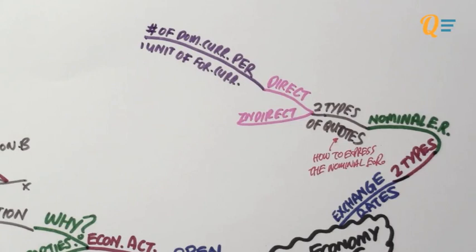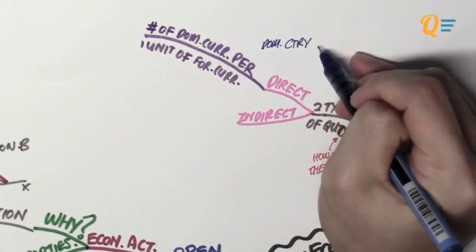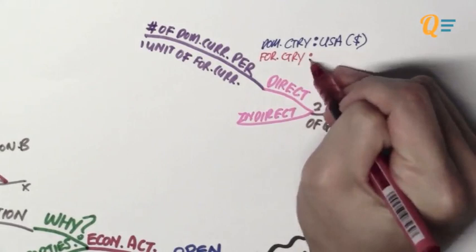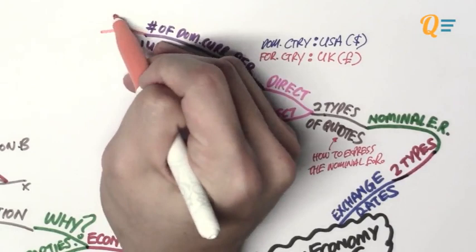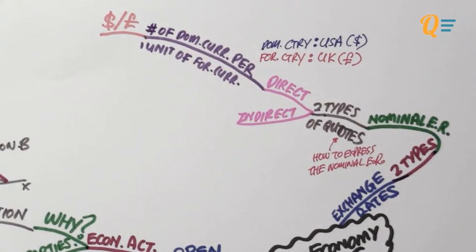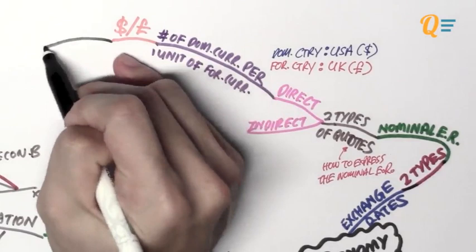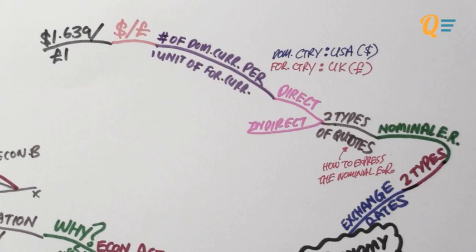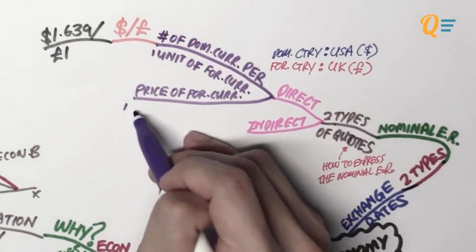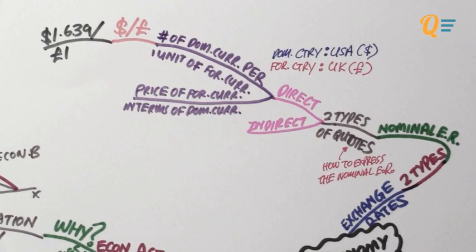To make things easier, let's use a real life example. Let's say our domestic country is the USA, which uses the dollar, and the foreign country is the United Kingdom, which uses the pound. To use the direct quote to express the exchange rate between the dollar and the pound, we take the dollar and divide it by the pound. This is the number of domestic currency per one unit of foreign currency — that's why we take the domestic currency, the dollar, and divide it by the pound. From the time of recording, this exchange rate is 1.639 US dollars for one British pound. So the direct quote is the price of foreign currency in terms of domestic currency.